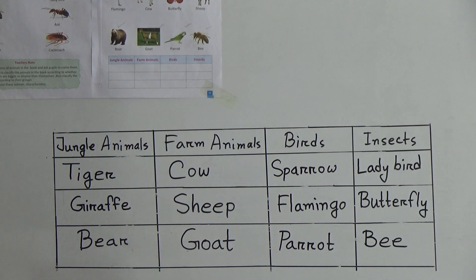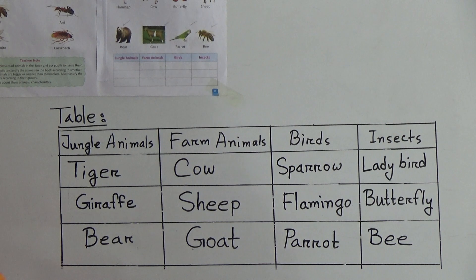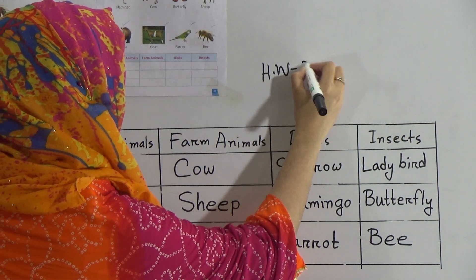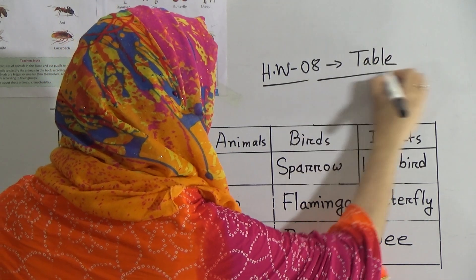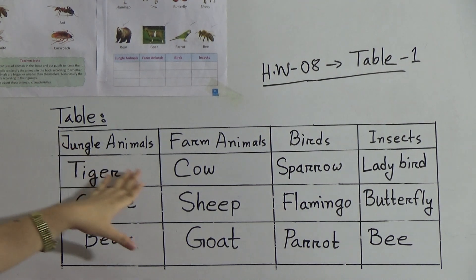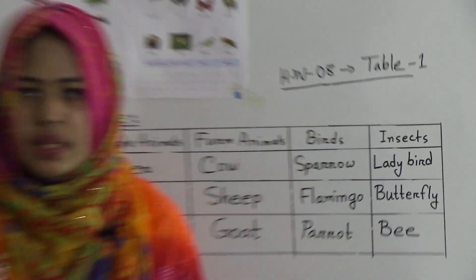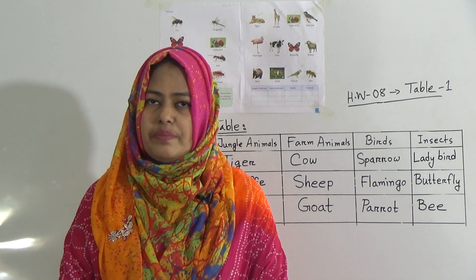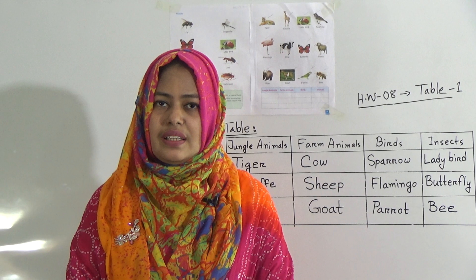That's it. Now I have finished this table. So dear students, it was our today's topic. Now I will give you homework. Your homework will be this table — make this table like me, with jungle animals, farm animals, birds, and insects. So dear students, I hope you have understood today's topic. Keep practicing at home and do your homework in your homework copy. Stay home and we will see you again in our next class.